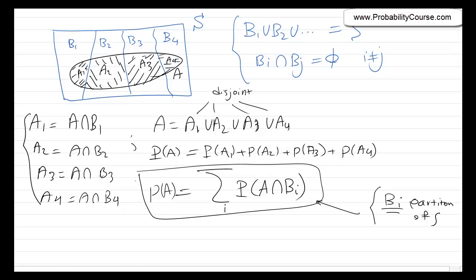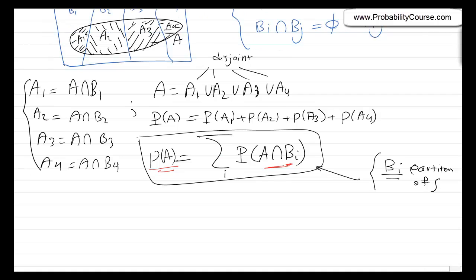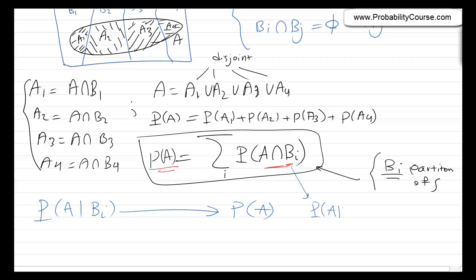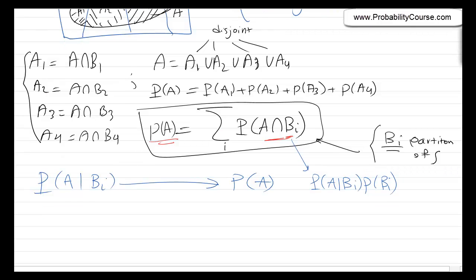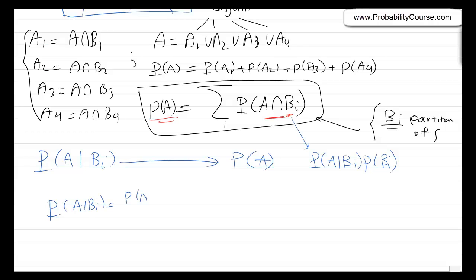Now, why is this useful? There are scenarios in which we know probability of A intersection with Bi, but we are interested in the probability of A, so we use the law of total probability. In particular, this is useful when we have the conditional probabilities of A given Bi. So we have a problem in which we know probability of A given Bi for i equals 1, 2, 3, and so on, but we are interested in probability of event A. Remember, the probability of A and Bi can be written as probability of A given Bi times probability of Bi — this is just the definition of conditional probability. The conditional probability of A given Bi is simply probability of A and Bi divided by probability of Bi. So if you multiply both sides by probability of Bi, we obtain that A intersection with Bi equals probability of A given Bi times probability of Bi.